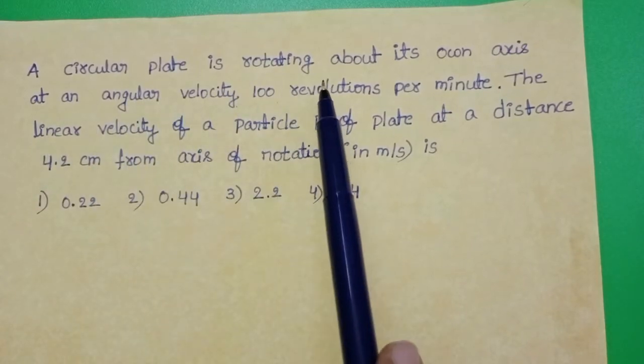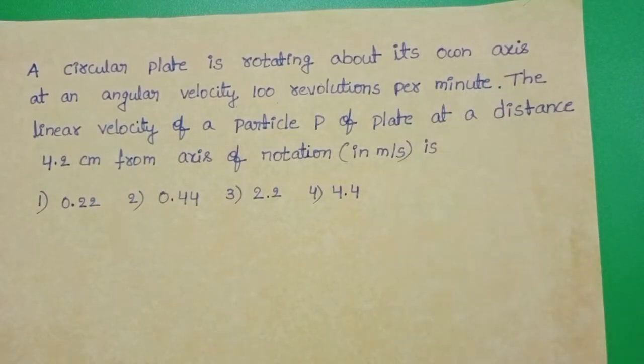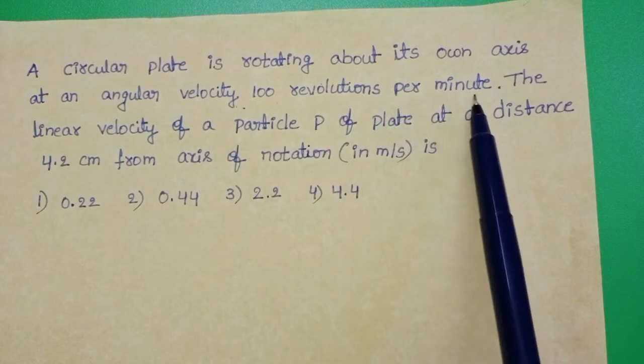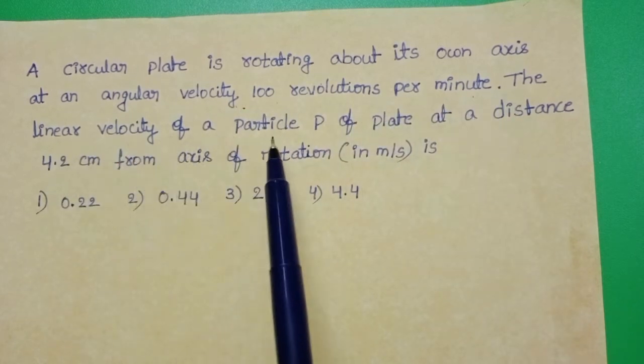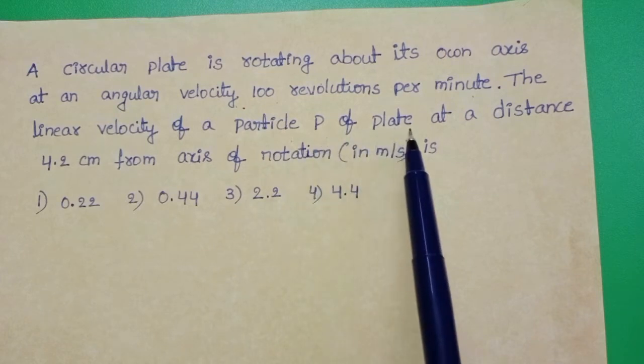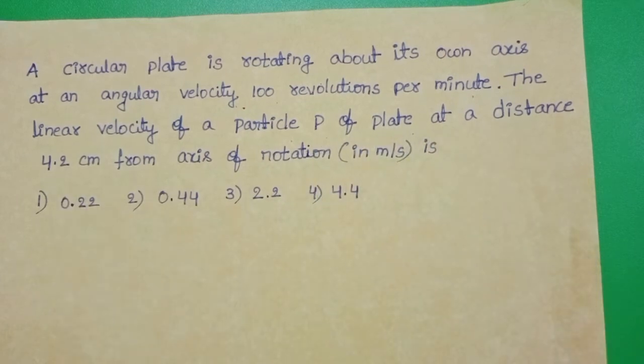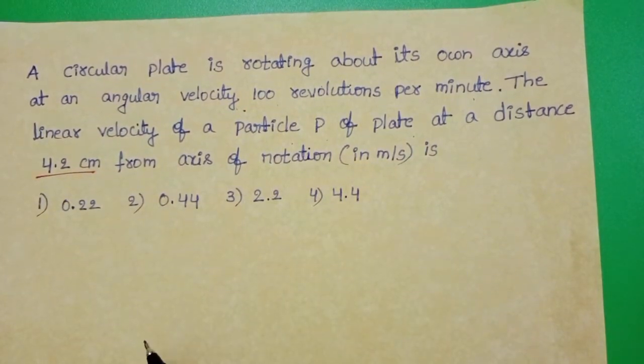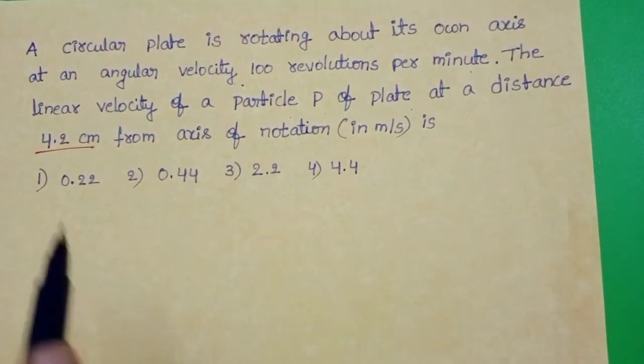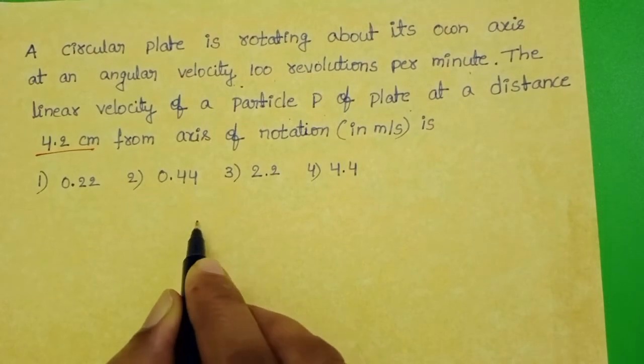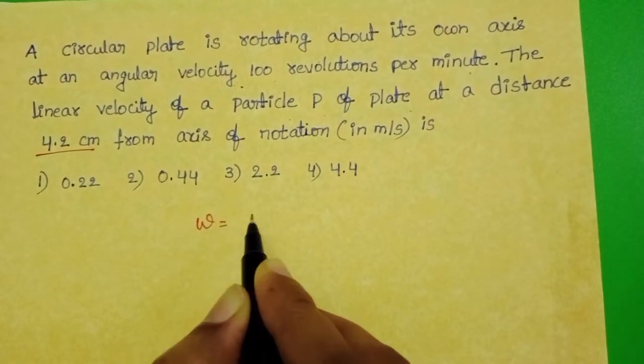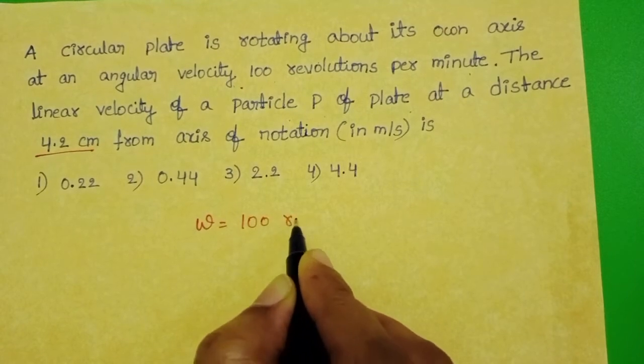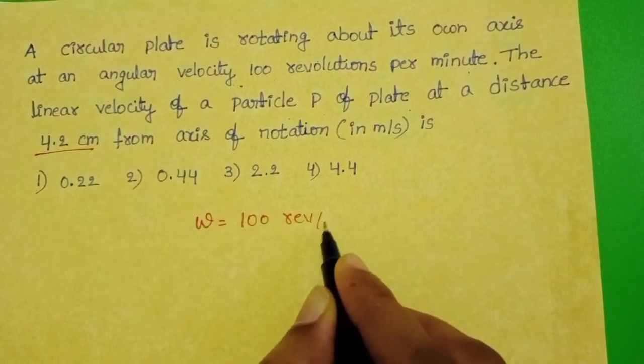A circular plate is rotating about its own axis at an angular velocity of 100 revolutions per minute. The linear velocity of a particle P of the plate at a distance of 4.2 cm from the axis of rotation is given. The circular plate is rotating with an angular velocity of 100 revolutions per minute.